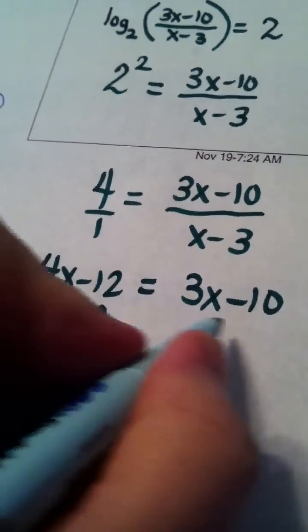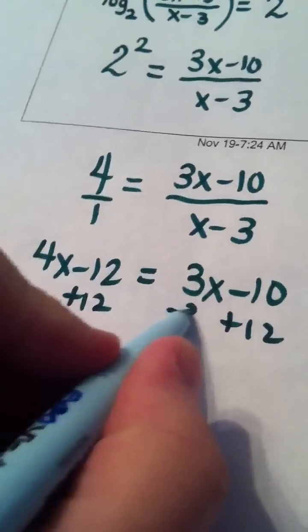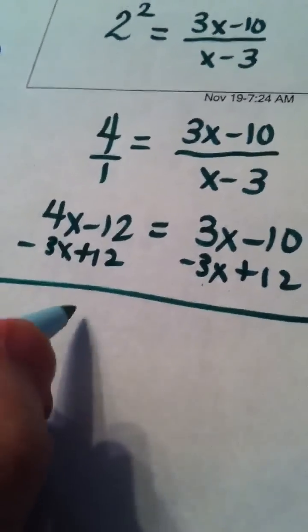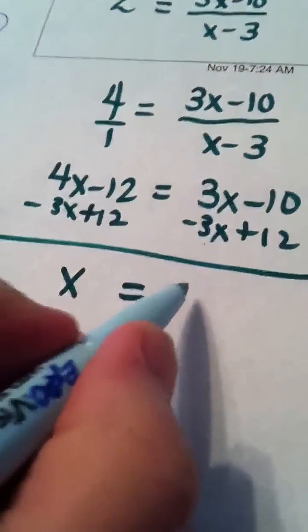I'm going to add 12 to both sides, I'm going to subtract 3x from both sides, and I'm going to be left with x equals 2.